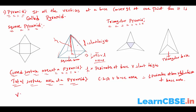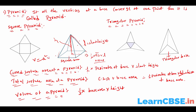The volume of the pyramid is (1/3) × base area × height. For a square pyramid with base side a, the base area is a², so volume = (1/3) × a² × h. So one-third times the base area into the height of the pyramid gives the volume of the pyramid.